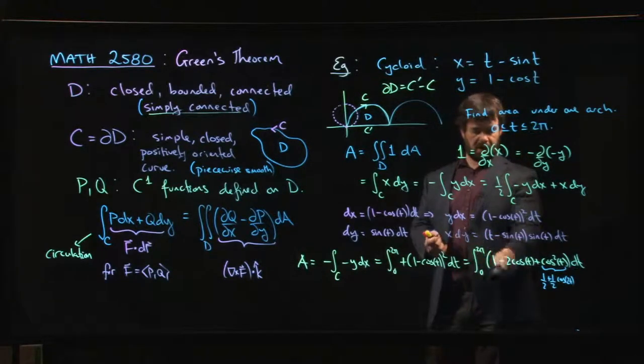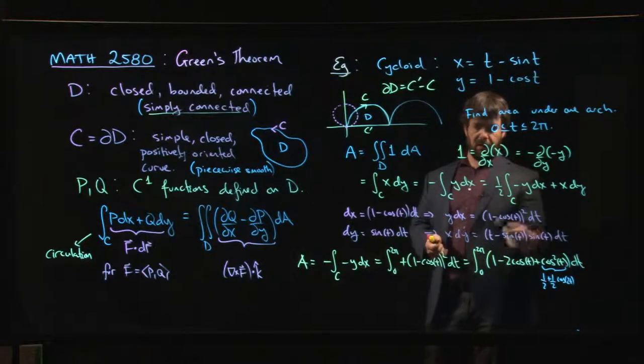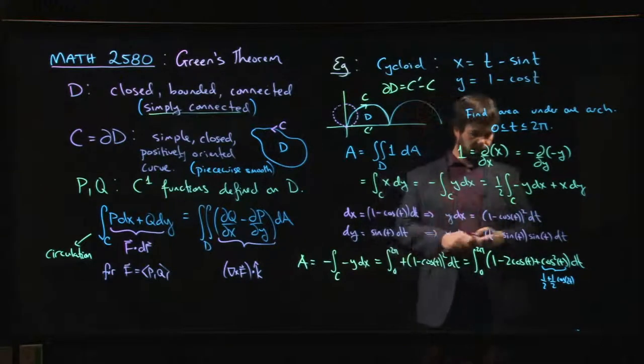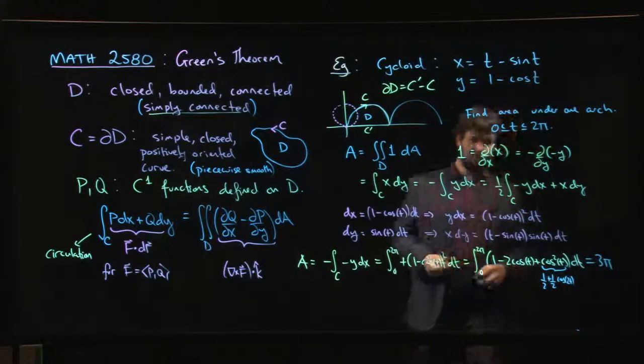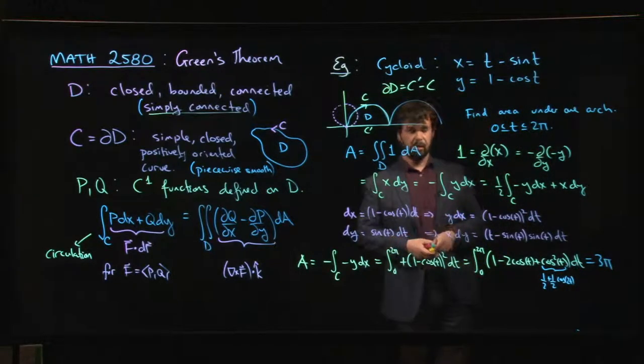Cos t integrates to sin t, I'm plugging in multiples of π. Same thing with cos 2t. These don't contribute to the integral because my bounds are places where the antiderivatives are zero. So all I got to worry about is the three halves. Three halves times 2π gives me 3π for my answer. Now we've got the area under the cycloid.